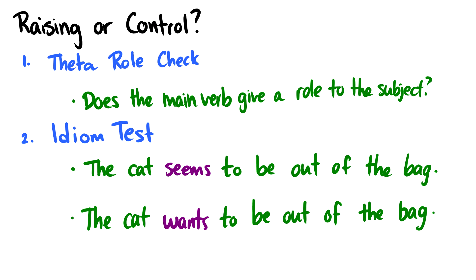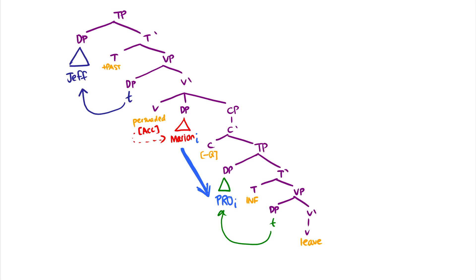So the question is, how do we tell the difference between raising verbs and control verbs? The first thing we can do is we can do a theta role check, and we can say does the main verb give a role to the subject. So we look at persuaded. Persuaded needs someone to do the persuading, so it needs an agent, yes. But what about a word like seems? Jeff seems to be happy. There's no seemer. That's not something that exists, so the subject wouldn't get a theta role from the verb seems.